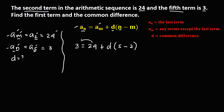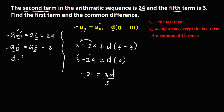Simplify: transpose the positive 24. So we have 3 minus 24 equals d times 5 minus 2. That gives negative 21 equals 3d. Divide both sides by positive 3 to solve for d. Negative 21 divided by 3 is negative 7. So negative 7 is the common difference.